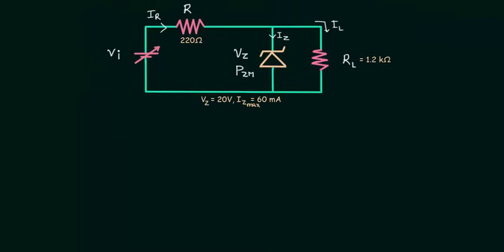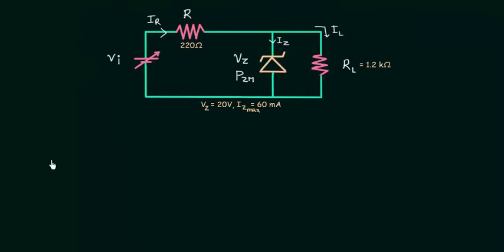If you remember the third part of Zener diode as voltage regulator, I explained VI minimum. The minimum value of input voltage is equal to VZ times the quantity R plus RL, where R is the series resistance or current limiting resistance, and RL is the load resistance, divided by RL. In this problem VZ is equal to 20V.